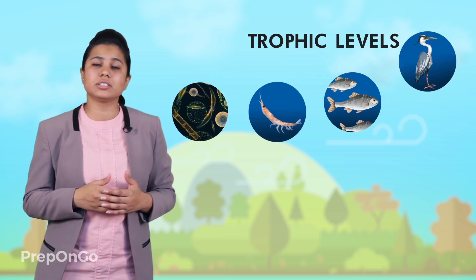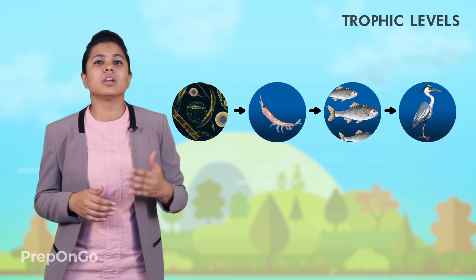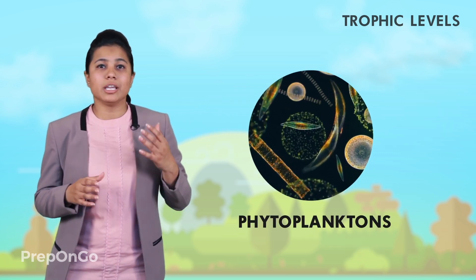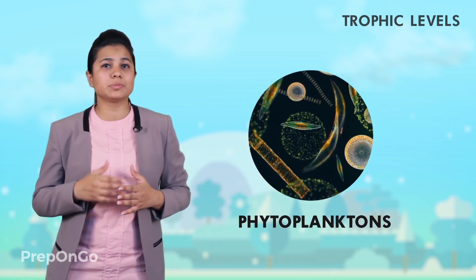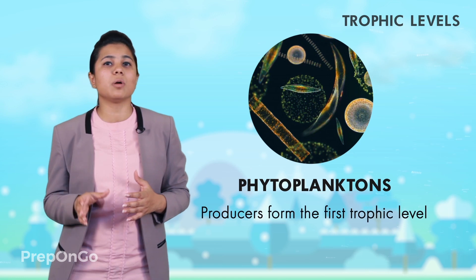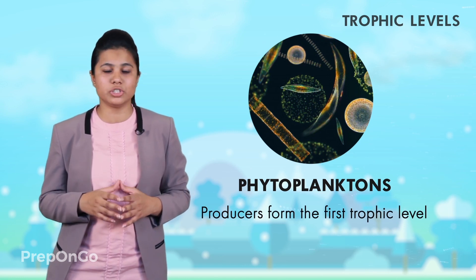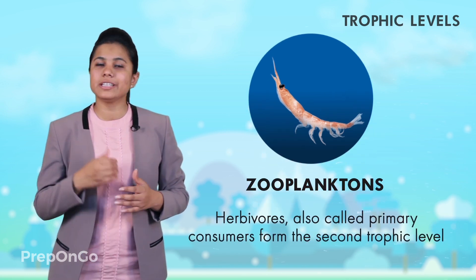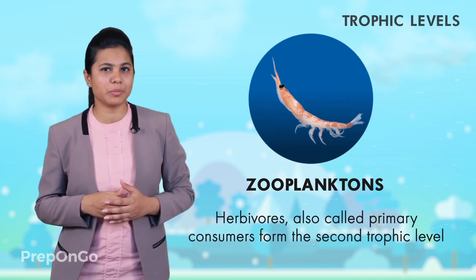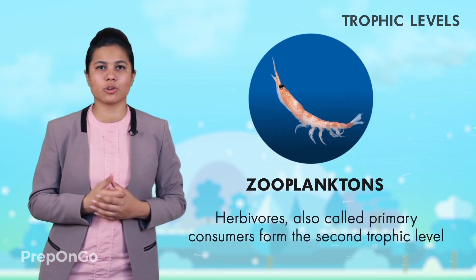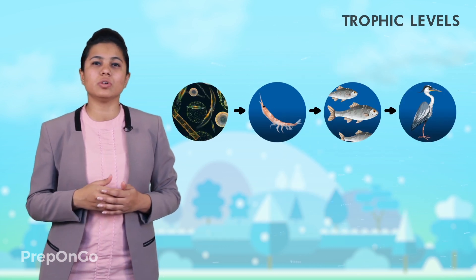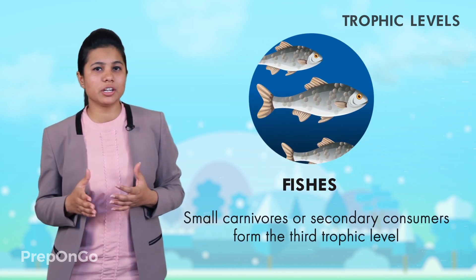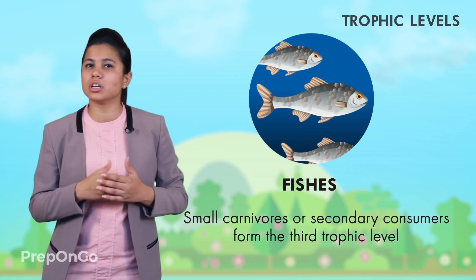In the pond ecosystem which we have seen previously, the first link of the food chain was phytoplanktons. They make their own food and are known as producers, so they form the first trophic level. They were eaten by zooplanktons, which are herbivores. These herbivores are also called primary consumers and form the second trophic level. Small carnivores like fishes eat the zooplanktons — they are the secondary consumers and form the third trophic level.